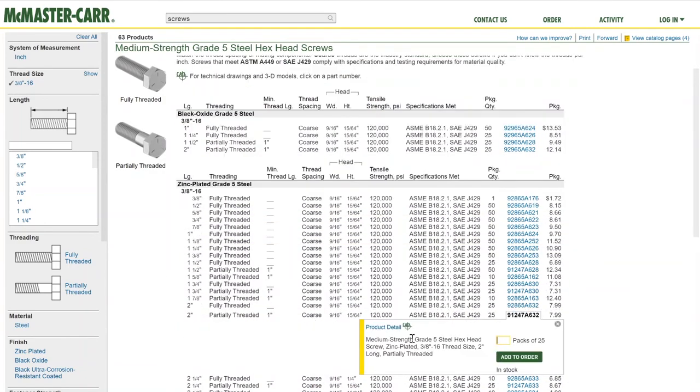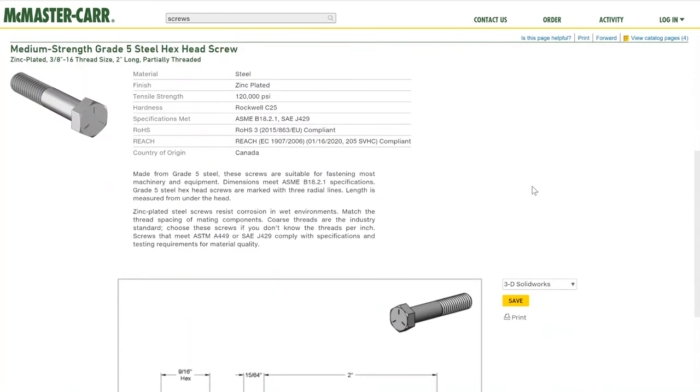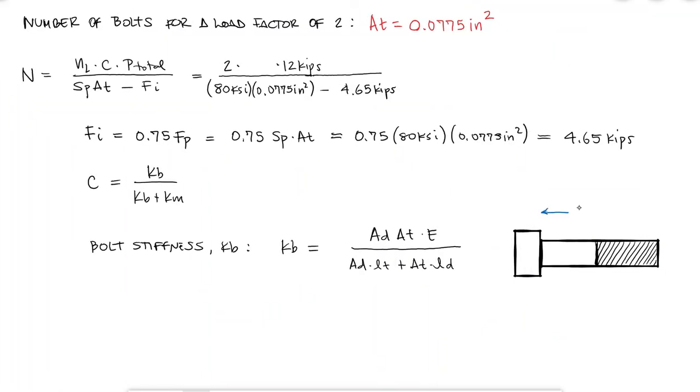Here I can see that the threaded length LT is equal to 1 inch, and by looking at the height of the nut, which is close to the height of the head of the bolt, means that the bolt works. By works, we mean that the length of the bolt we chose is longer than the thickness of the members or the grip L of 1.5 inches plus the height of the nut, so the nut will be fully engaged. From this diagram I can find that the length of the threaded portion within the grip is 0.5 and the non-threaded length is 1 inch.